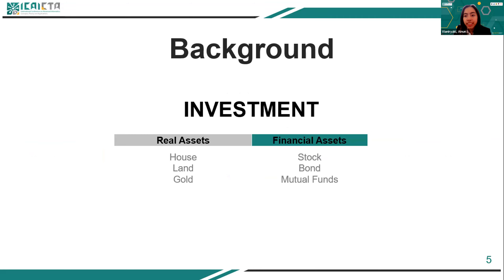In general, there are two types of investment, namely investment in financial assets and investment in real assets. Investment in financial assets are investments that have no form, for example stocks, bonds, and mutual funds, while investment in real assets are investments that have tangible forms, for example houses, gold, and land.